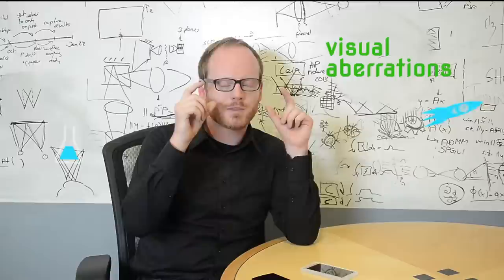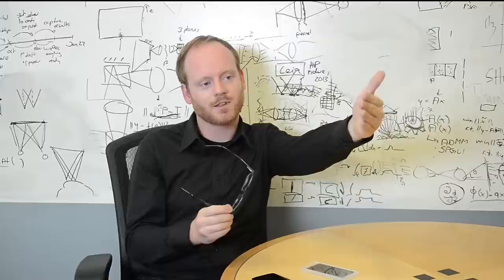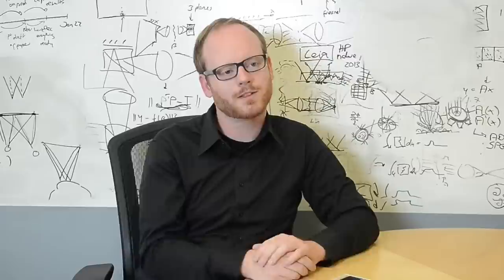The way we perceive the world is we have two eyes and they focus on objects at different distances, and some of us have what's called visual aberrations. So something's wrong with the lenses in our eyes and we can't really focus our eyes. In my case I'm wearing glasses so that I can see objects that are far away very sharply, and that's known as short-sightedness or myopia.